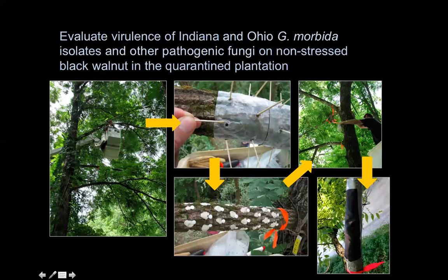The inoculation sites are covered in a mesh screen so that other beetles can't get in and potentially vector the pathogen. This work is being done at Yellowwood State Forest in southern Indiana and also in Butler County, Ohio. We're asking questions about the extent to which these other pathogens can affect the health of branches distal to the inoculation site, and whether cankers form and grow — we still don't know if Geosmithia causes annual or perennial cankers.